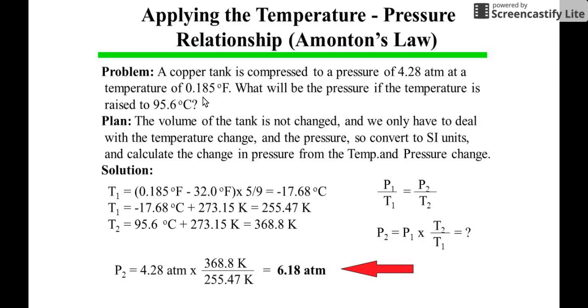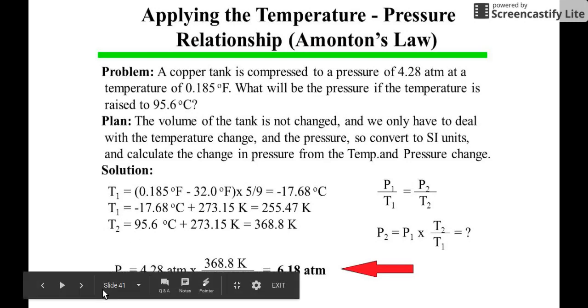You are given the pressure of 4.28 atmosphere and the temperature of 0.185 degrees Fahrenheit. If you change the temperature, what will be the new pressure? In other words, you're given P1.